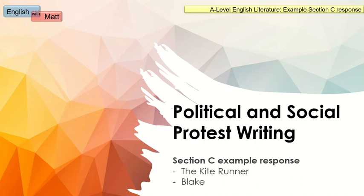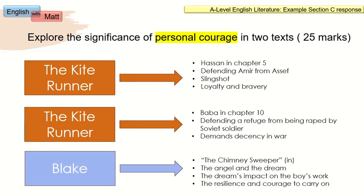In today's video, I'm going to be looking at a Section C example response for those of you studying the political and social protest writing paper with AQA Literature Spec B. For Section C, students have approximately one hour to talk about two texts, and that includes multiple poems. So a text means a collection of work, essentially. The two texts here are the Kite Runner and Blake, and the question is about personal courage.